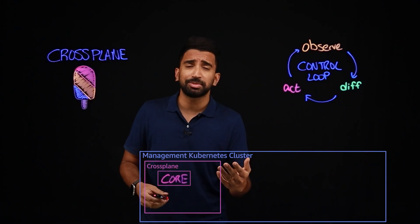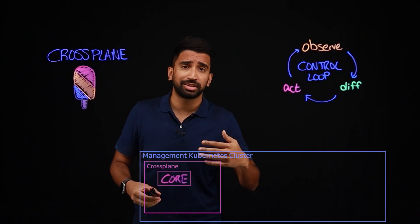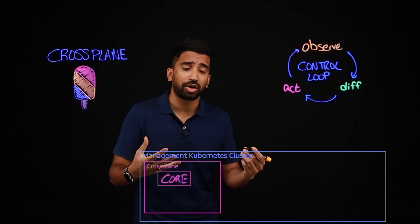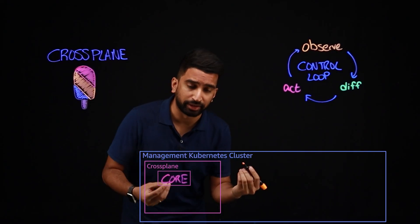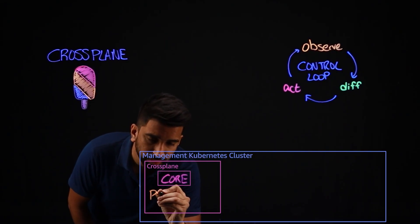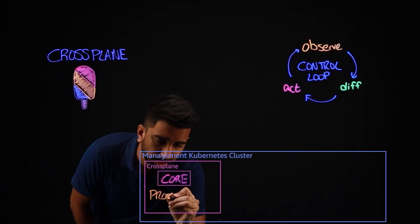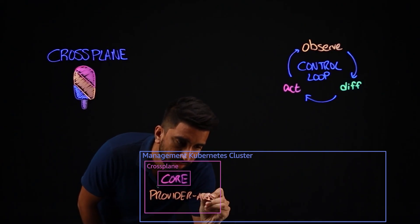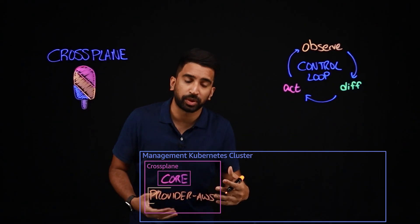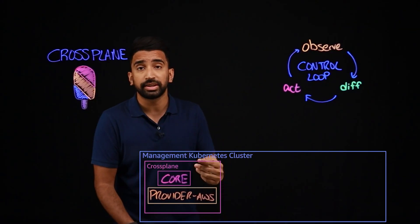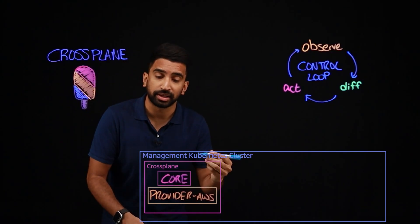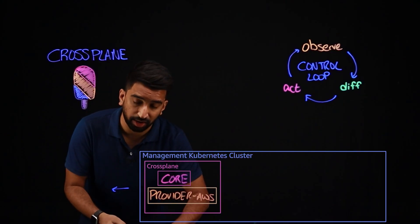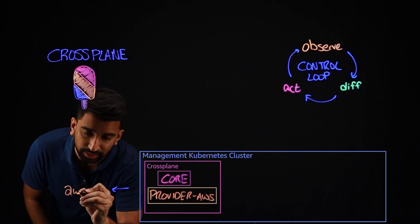But for Crossplane to be able to actually communicate with a cloud service provider, we'll need what's called a provider. So this will be provider AWS, which we can install onto our cluster as well. This is going to enable Crossplane to communicate with our account on AWS cloud.